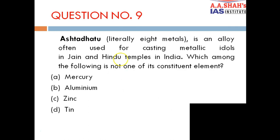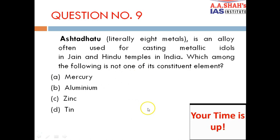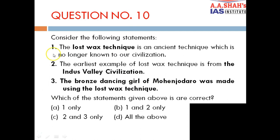Question 9: Ashtadhatu, literally eight metals, is an alloy often used for casting metallic idols in Jain and Hindu temples in India. Which among the following is NOT one of its constituent elements? Options: A. Mercury, B. Aluminium, C. Zinc, D. Tin. The correct answer is B — Aluminium. Ashtadhatu is an alloy of gold, silver, lead, iron, tin, copper, zinc and mercury or antimony. Aluminium is not part of it.